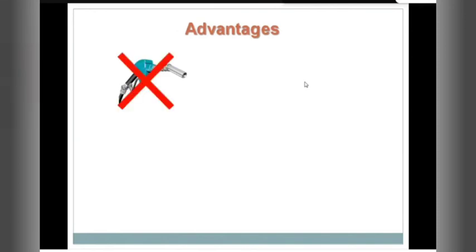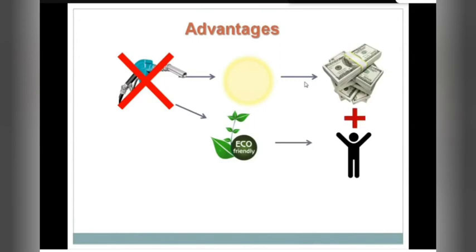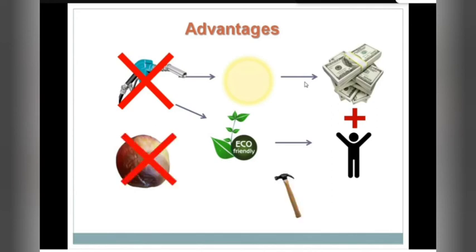Now let's talk about the advantages. In solar dryers, you are not using any fuel — only solar energy — so you're not spending money on fuel, therefore saving money. As they say, whatever you save is also a form of income. Second, it does not generate any pollution, so it is eco-friendly, generating good health for everyone. Third, we are not allowing our produce to degrade in quality, and it doesn't require much maintenance.